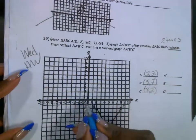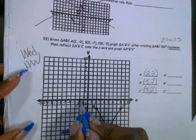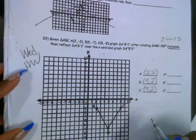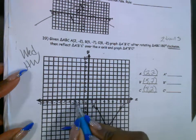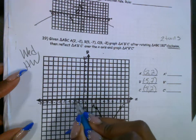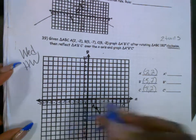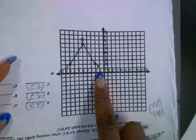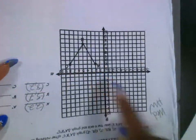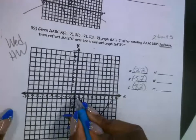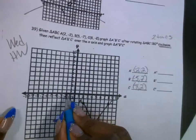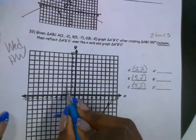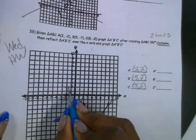So let's graph these points. Over 2 — 1, 2 — and then we're going up. Let me make sure I got that right. Over 2 — that's negative 2 — and up 1, 2. This is A.